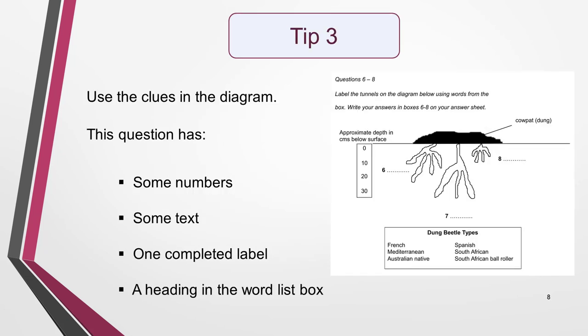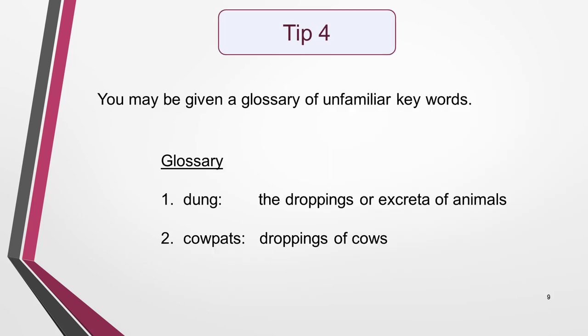Tip 3: Use any little clues present in the diagram to help you understand it. In our diagram, for example, we have some numbers, some text, one completed label and a heading in the word list box. Each gives us important information about the topic and would be related to the answers in some way. Tip 4: You may be given a glossary of key words that could be unfamiliar to you — they'll be below the text. Here's the glossary for this question: first, dung, which means the droppings or excreta of animals; and second, cowpats, which means the droppings of cows.